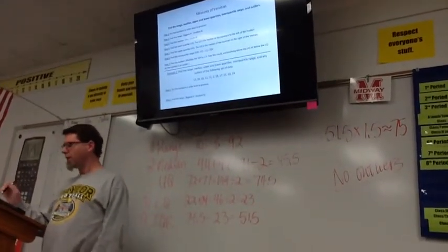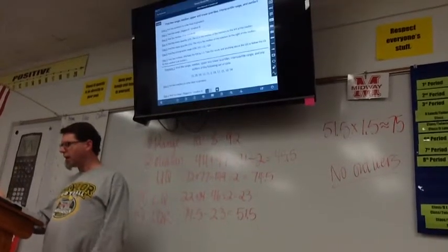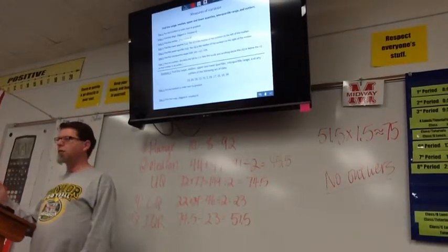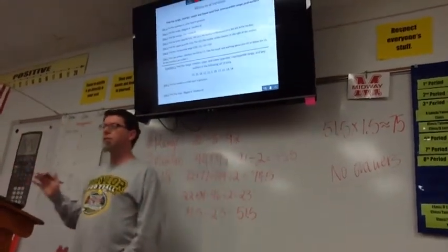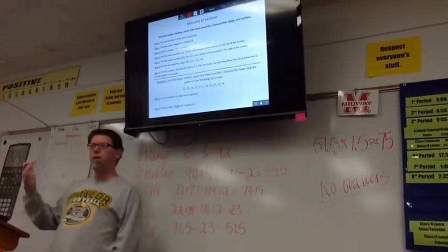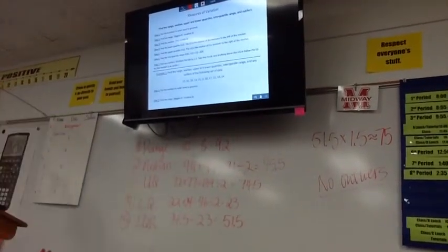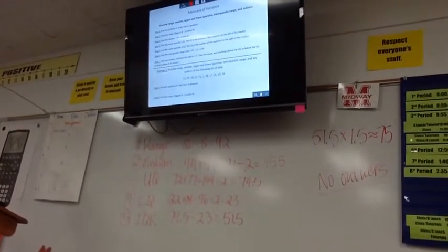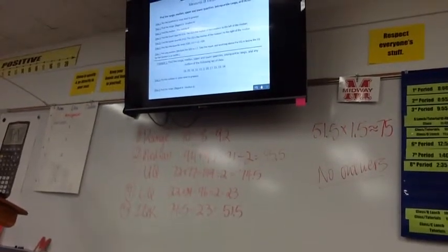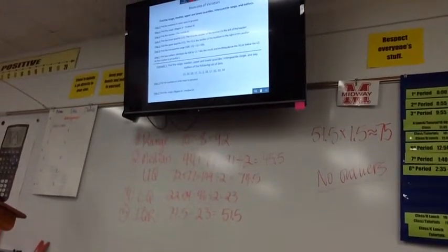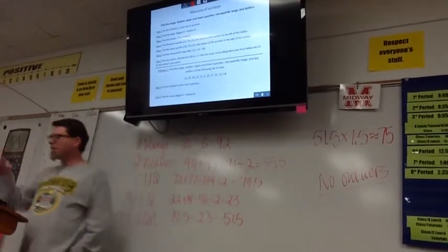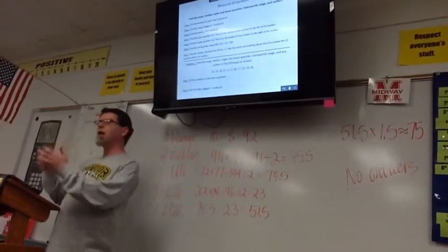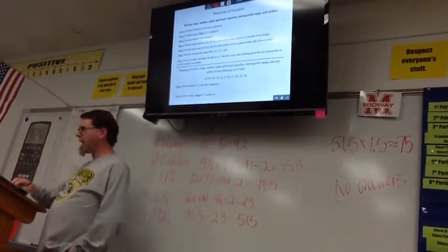If you look at the top of the page, it says measures of variation. Find the range, median, upper and lower quartiles, interquartile range, and outliers. Have you seen all those before? No. Some of them are new, which would hopefully encourage you to pay a little bit more attention today. There are seven steps that we're going to go through to find everything that we need to create the graphs that we're going to create on Tuesday.